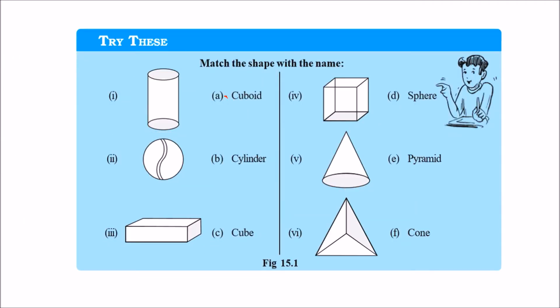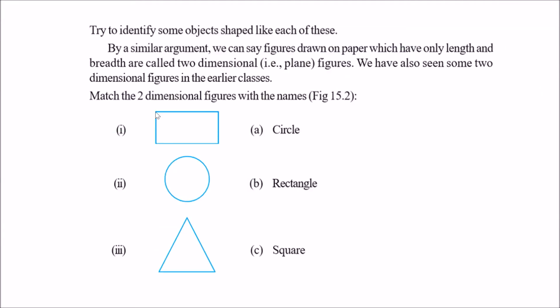So, this is a cuboid, this is a cylinder, and this is a sphere. This is a cone, and this is a pyramid. You can also match the two-dimensional figures.